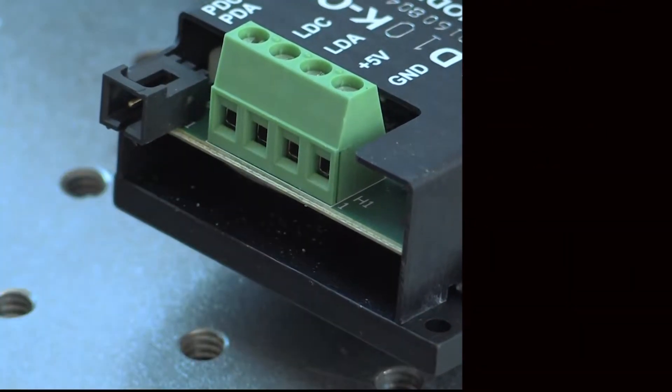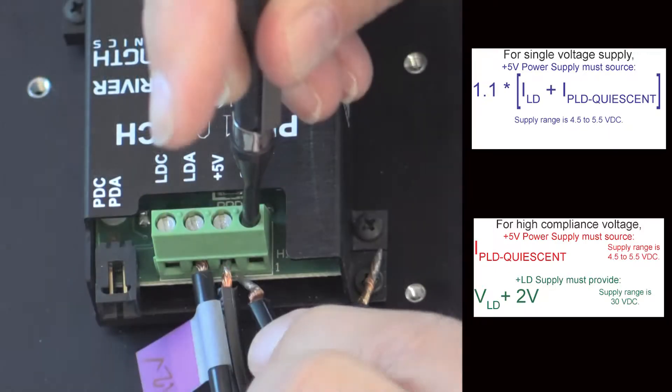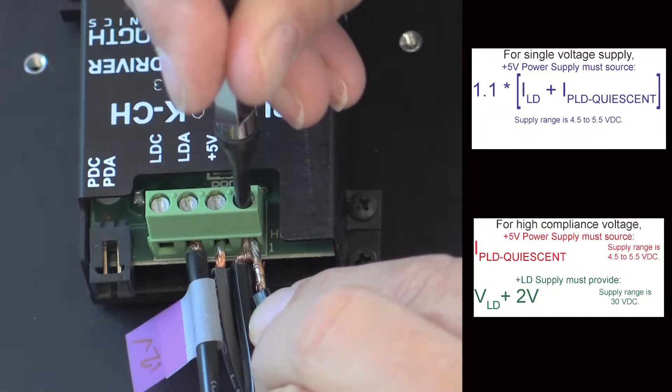The control electronics still need plus 5 volts, so connect that power supply to the plus 5 volt and ground positions of terminal strip H1. Connect the higher voltage supply to LD anode and ground on the same terminal strip.